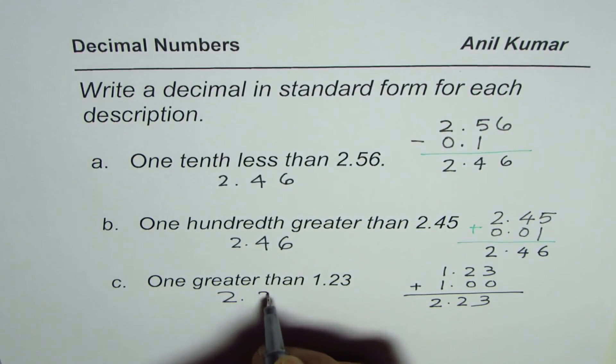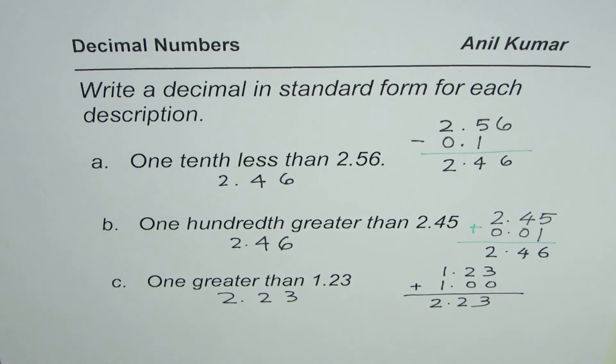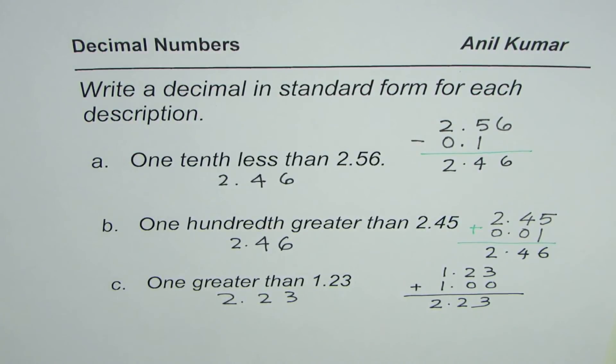So we get 2.23 as our answer. I hope this is interesting. So you can actually go through this video once again. Understand what it means when we say one tenth less than a number or one hundredth greater than a number. I hope that helps.